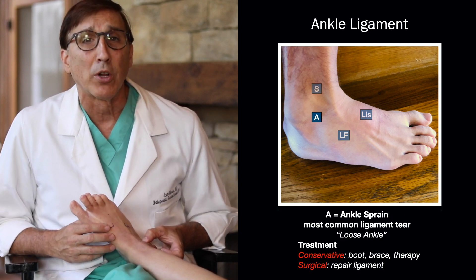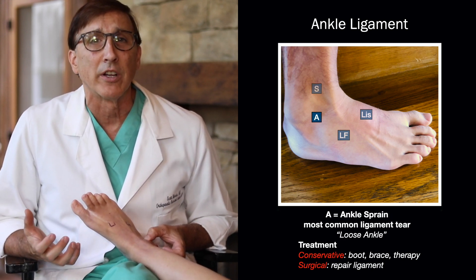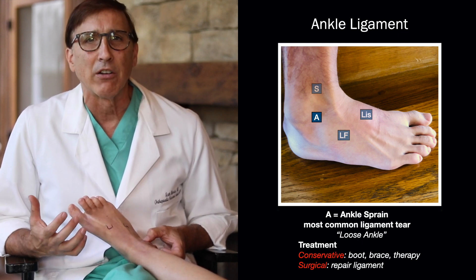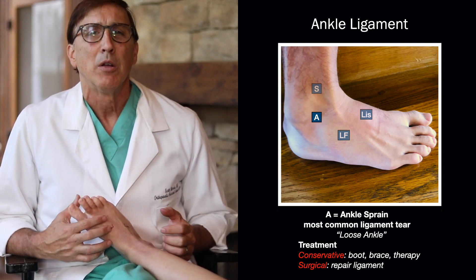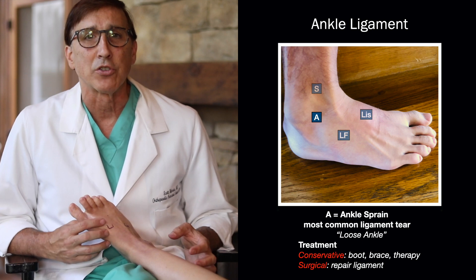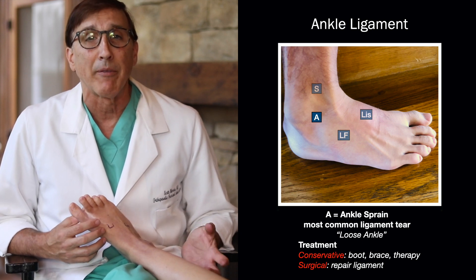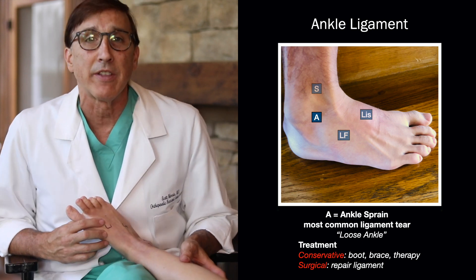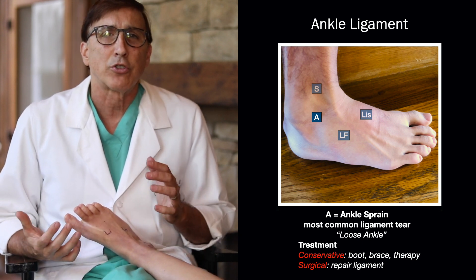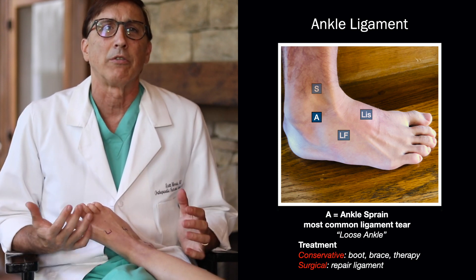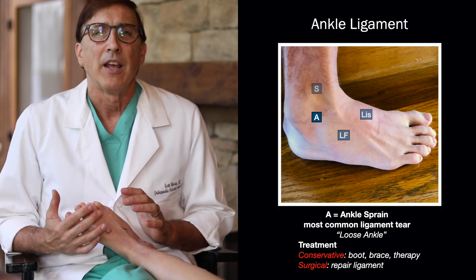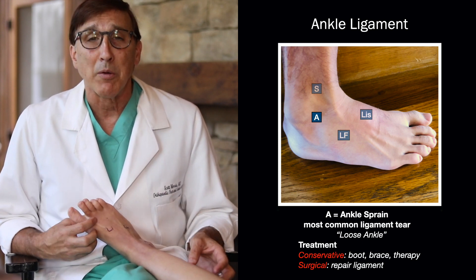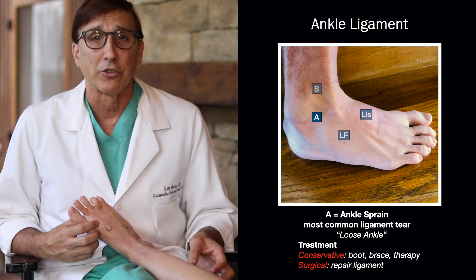Just below that is the most commonly injured ligament in the ankle: the anterior talofibular ligament, but we generally call that a lateral ankle sprain. It's a very common injury. Sometimes you end up with a loose ankle because of that, and sometimes it needs surgery. We start with conservative treatment of bracing and therapy, and if that doesn't work, then we have to stabilize it surgically.